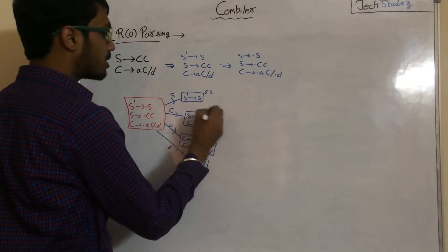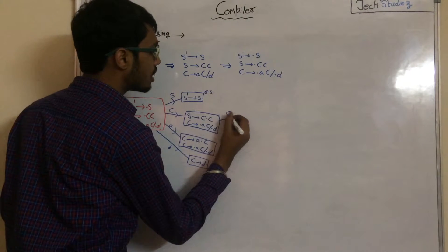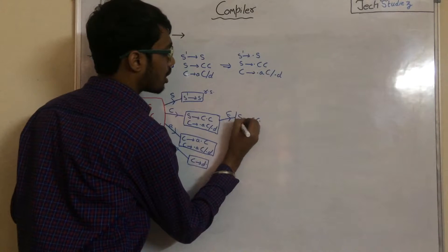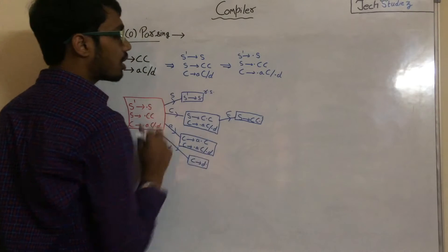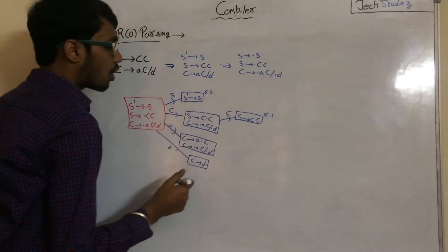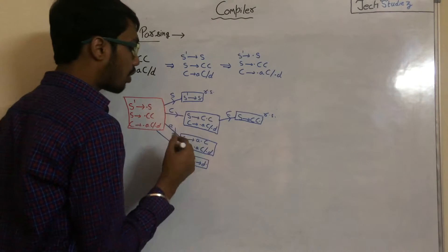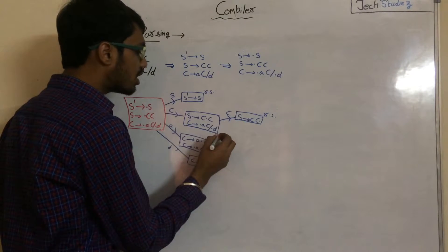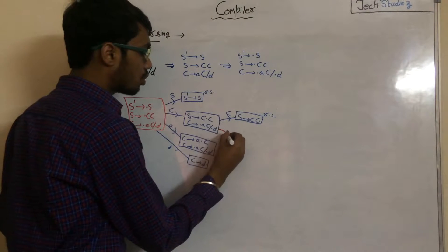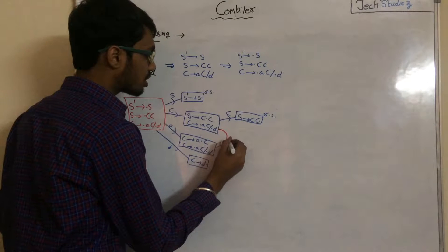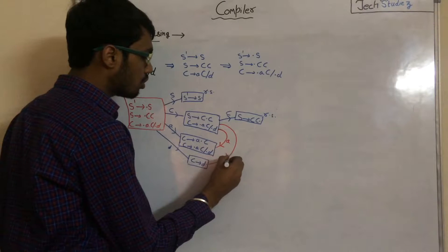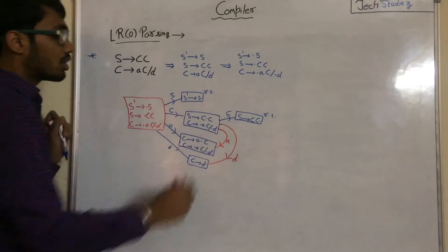Now take this set and apply GOTO move with C — what we get is S to CC·. The dot is at the last position with no terminal or non-terminal after it, so this is a reduced state. If we apply GOTO with 'a', we get C to A·C, and if we apply GOTO with D, we go to that state. This is a simple example of designing a canonical collection.